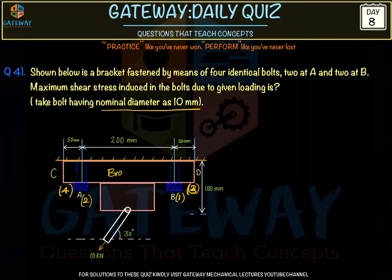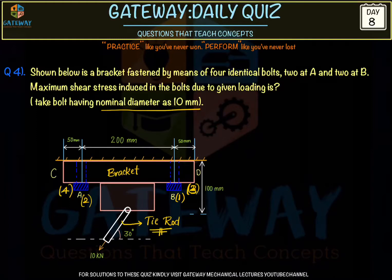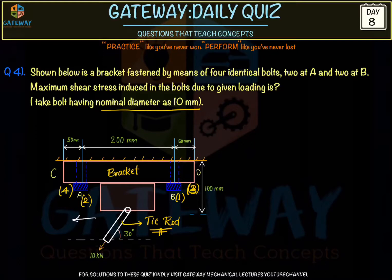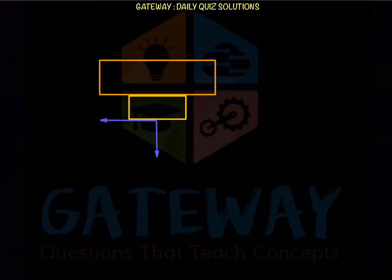The rod connected to the bracket is called a tie rod. The 10 kN applied load at 30° has two components: P·sin30° (along the bolt axis) and P·cos30° (parallel to the bolt plane). P·sin30° = 10000 × 0.5 = 5000 N; P·cos30° = 10000 × cos30° = 8660.25 N.